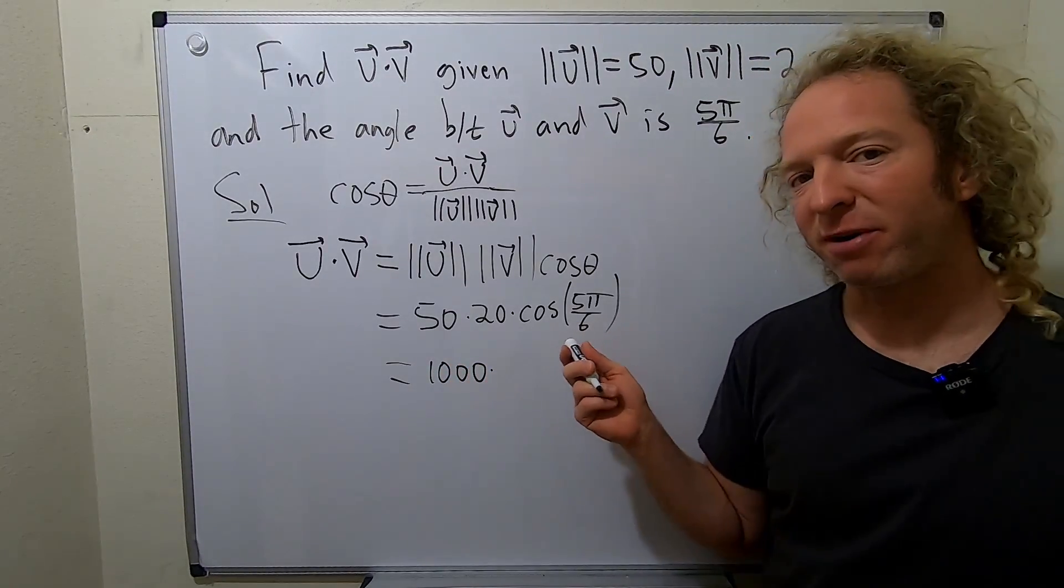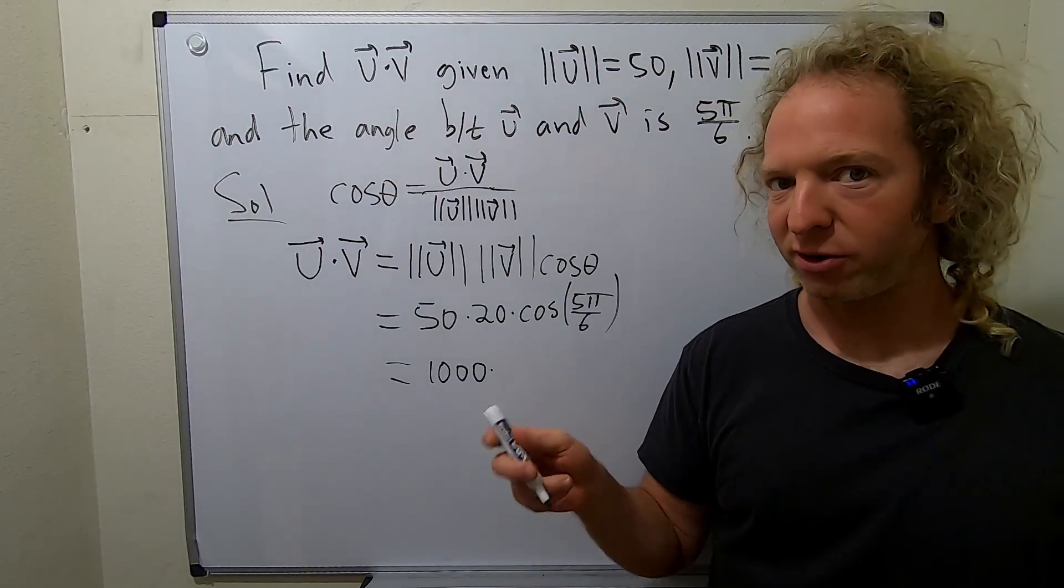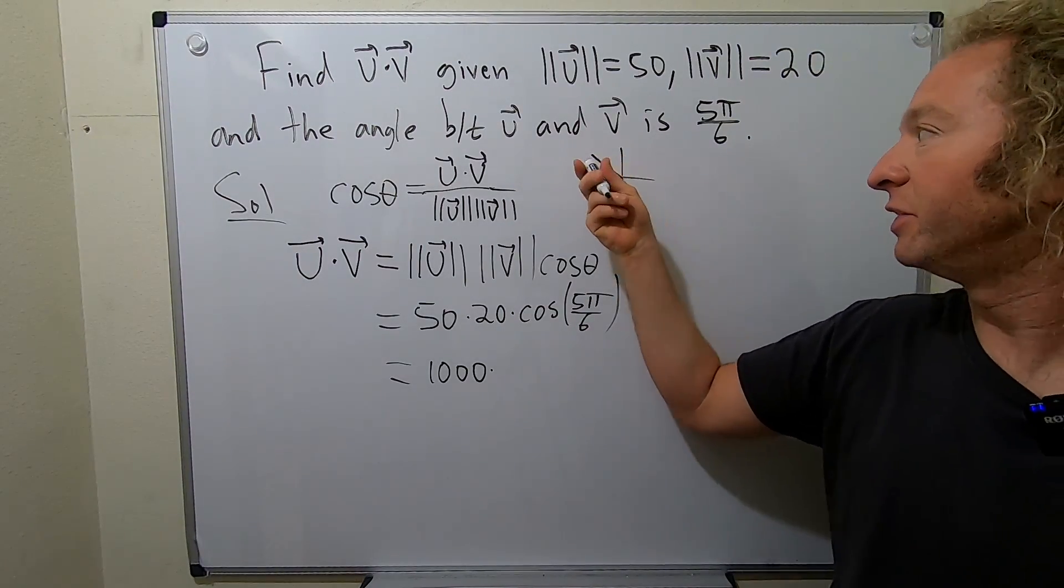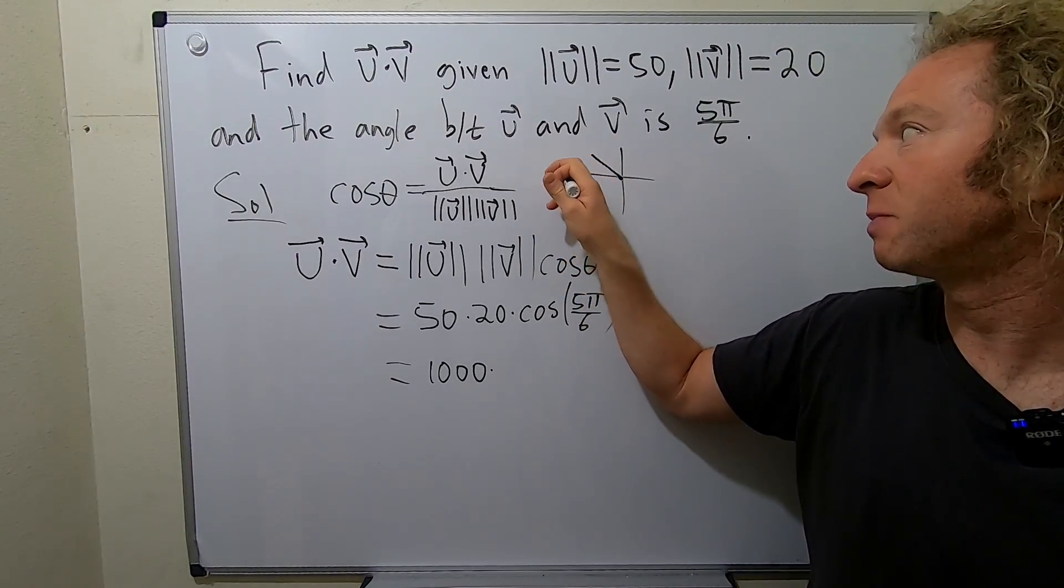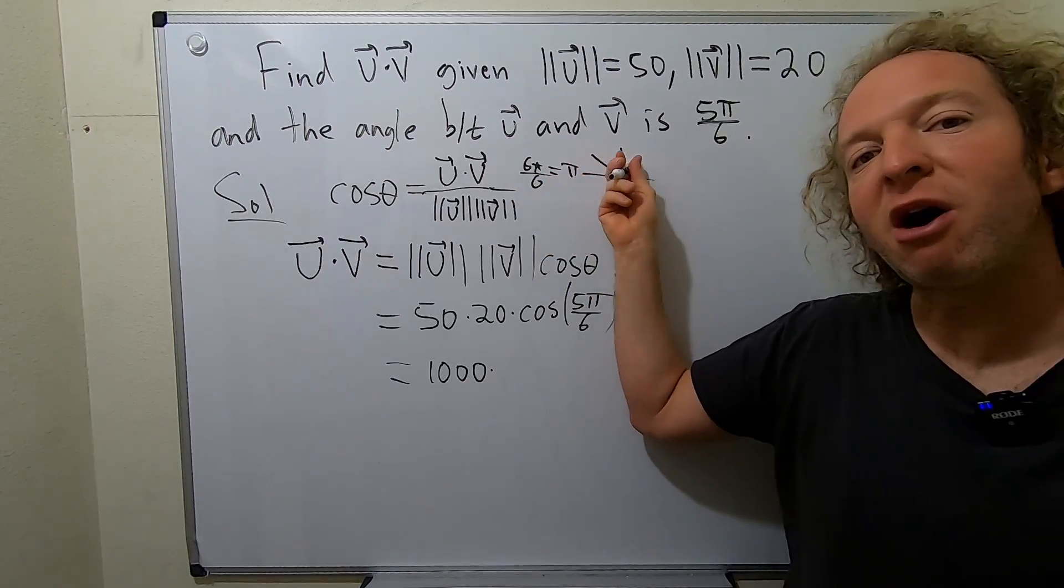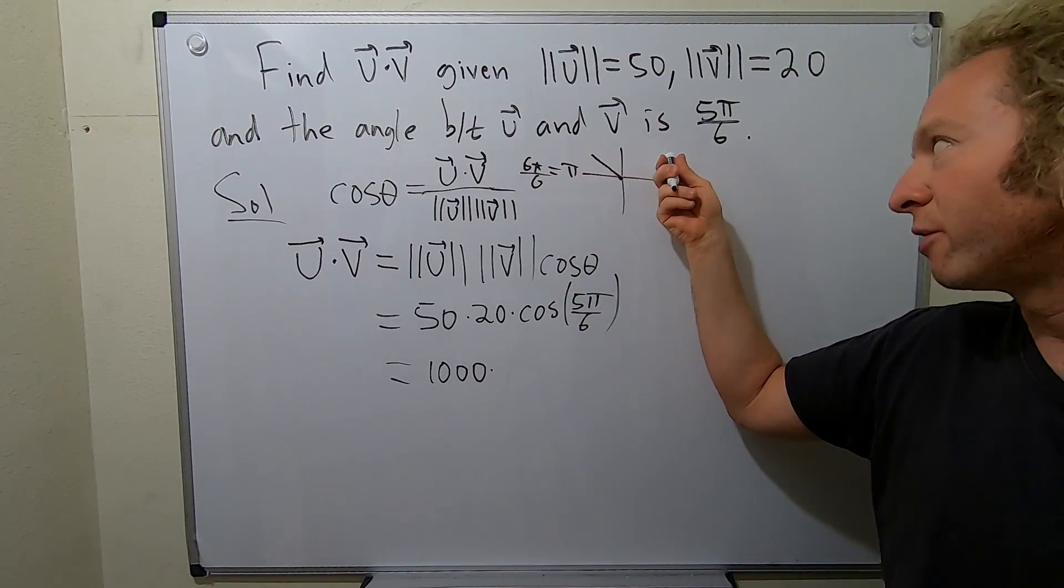And then cosine of 5π over 6. So I know that the cosine of π over 6 is the square root of 3 over 2. So 5π over 6 is over here. It's in quadrant 2, because this is π, which is 6π over 6. So 5π over 6 will be here. It's a little bit smaller than 6π over 6.